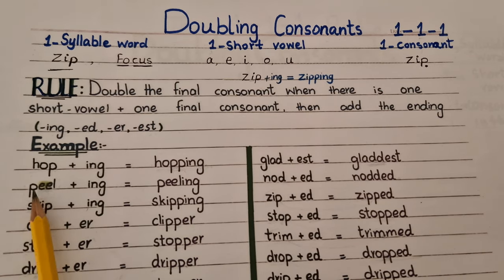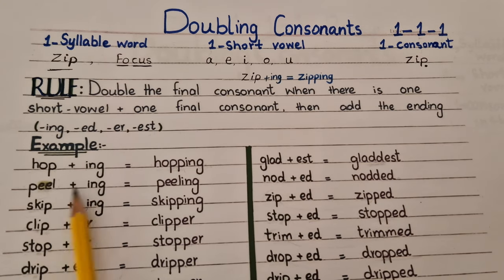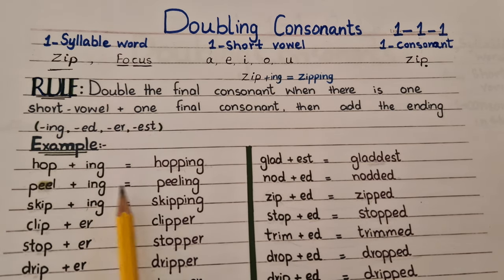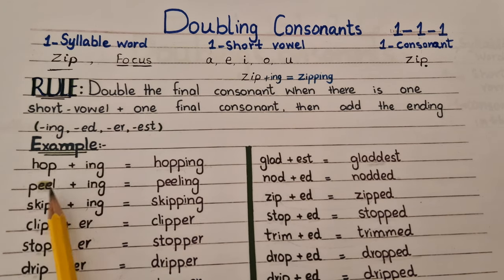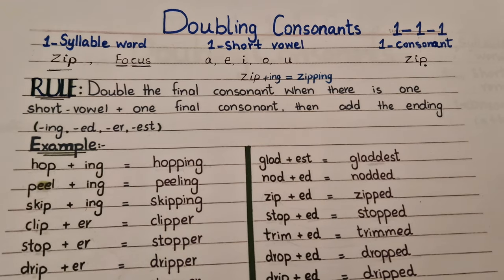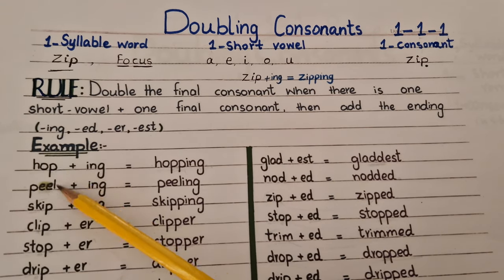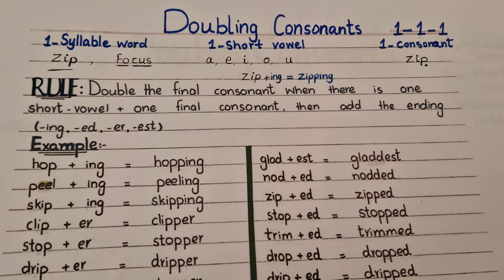Next example: 'peel'. When we add a suffix at the end of the word, it will become 'peeling'. But in this word, we are not doubling the final consonant, letter L. So in this video, we will learn when to double the final consonant when we add a suffix at the end of the word.